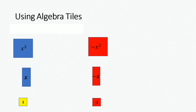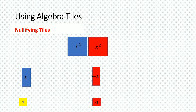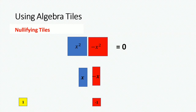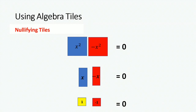When these tiles come together, you have a nullifying effect. For example, when the x squared tile meets with the minus x squared tile, we would have x squared minus x squared, which is equal to 0. When the x tile meets with the minus x tile, we would have x minus x, equal to 0. Similarly, when the unit tile 1 meets with minus 1, this would be equivalent to 0. Whenever these tiles come together, they are equivalent to 0 — in other words, they nullify each other.